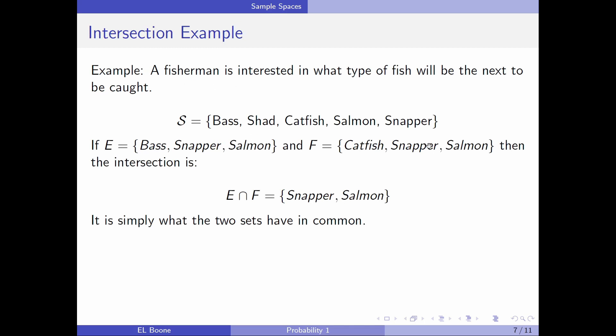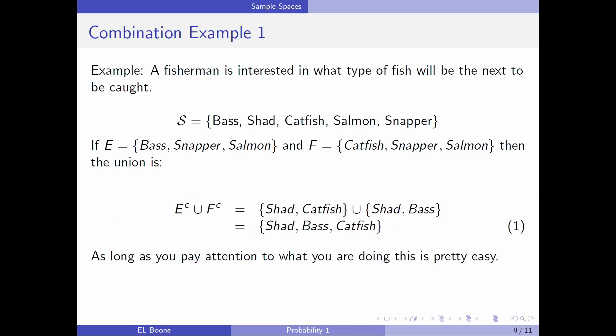An intersection. Same setup as before. Bass, snapper, salmon. Catfish, snapper, salmon. Are our E and our F. Then if we intersect these, we would look to see what they have in common. They both have snapper and salmon. Snapper and salmon. So that would be our intersection. So it's just simply what the two sets have in common. It's pretty easy.